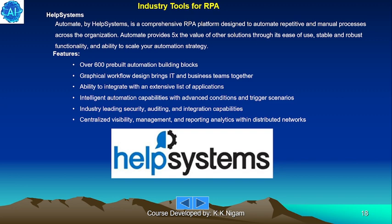Help Systems Automate is a comprehensive RPA platform designed to automate repetitive and manual processes across the organization. It provides five times the value of other solutions through ease of use, stable and robust functionality, and the ability to scale automation strategy. Features include over 600 pre-built automation building blocks, graphical workflow design that brings IT and business teams together, integration with an extensive list of applications, intelligent automation with advanced conditions and triggers, and industry-leading security, auditing, and centralized visibility management.